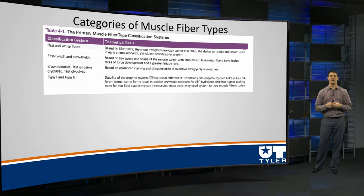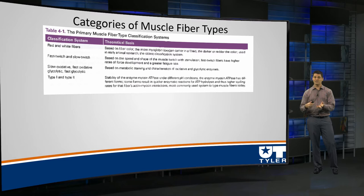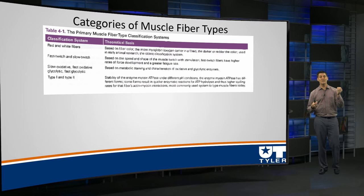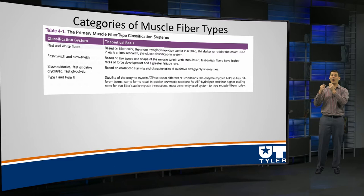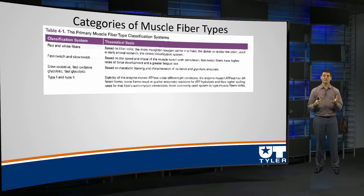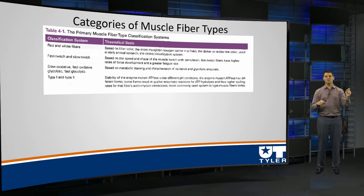Our next idea — the way we started to classify muscles — wasn't really based on color, but whether they were fast twitch or slow twitch. They started to make the link that the really red fibers had a much slower contraction speed, whereas the whiter the fiber, the faster it was able to contract. So we were starting to divide them into two general categories: our white fast-twitch and our red slow-twitch muscle fibers.